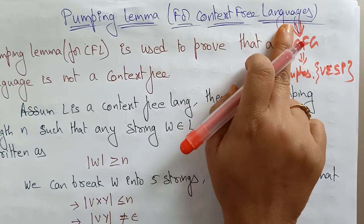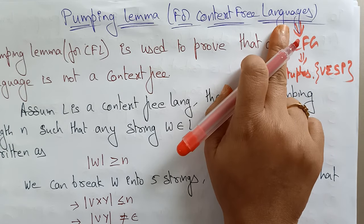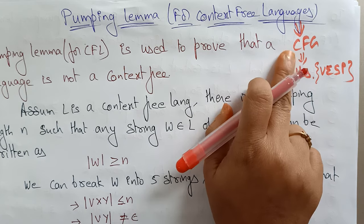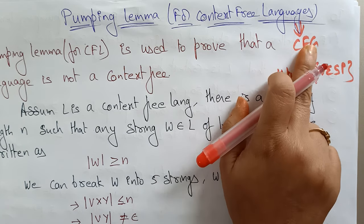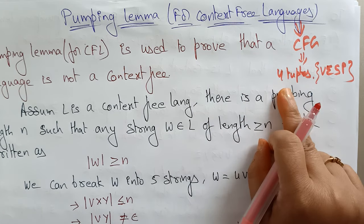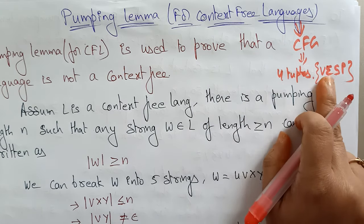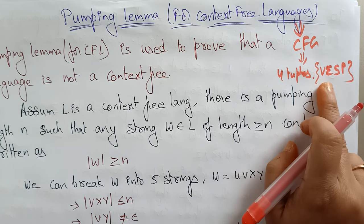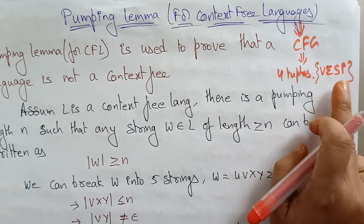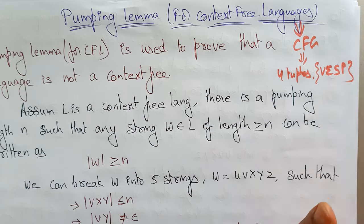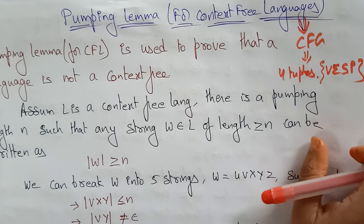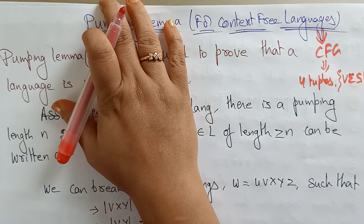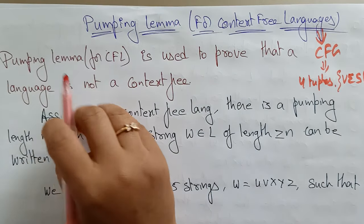A context-free language is a language generated by some context-free grammar. The context-free grammar is defined as a four-tuple (V, Σ, S, P), where V is the set of non-terminals, Σ is the input symbols, S is the start symbol, and P is the production rules.